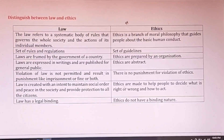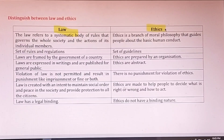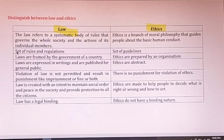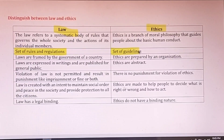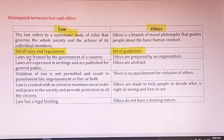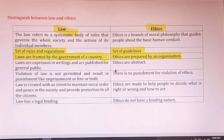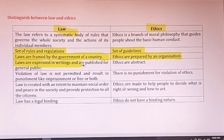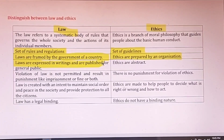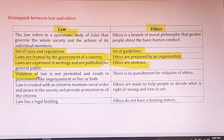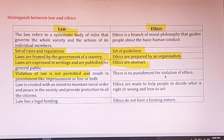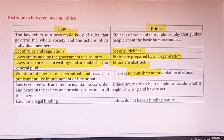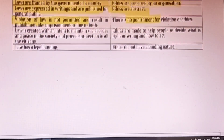The next important topic is the difference between law and ethics. Law is a set of rules and regulations, whereas ethics are a set of guidelines. Laws are framed by the government, whereas ethics are prepared by the organization. Laws are expressed in writing and published in magazines and reports, but ethics are generally abstract. Violation of law invites punishment, but violation of ethics does not. Laws are binding, whereas ethics are not binding in nature.